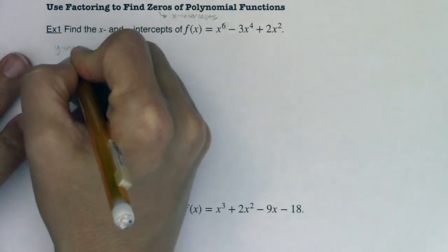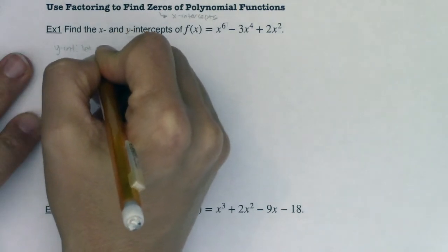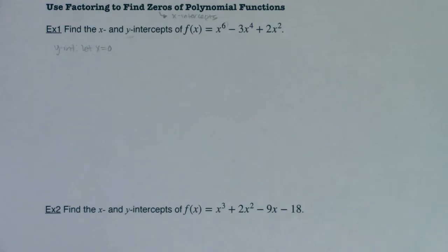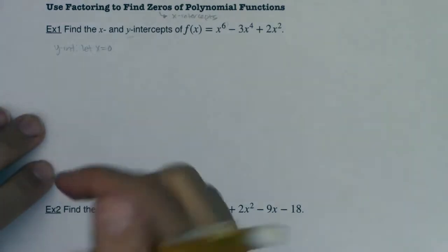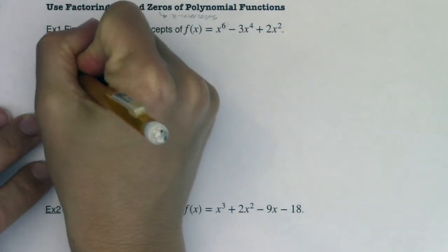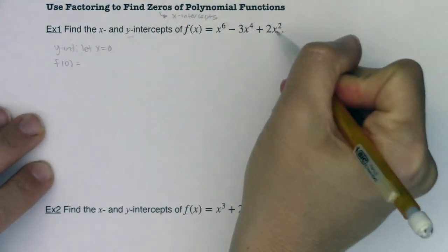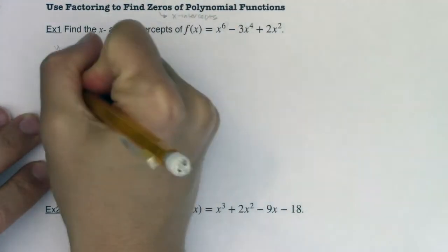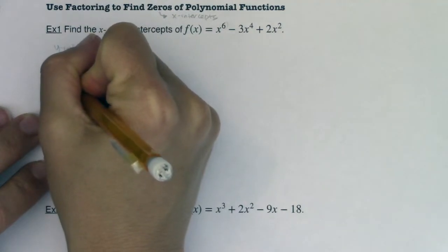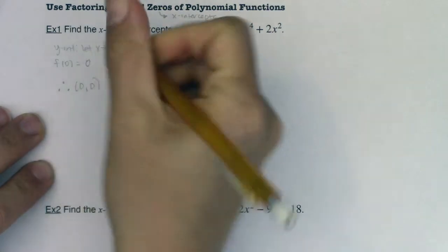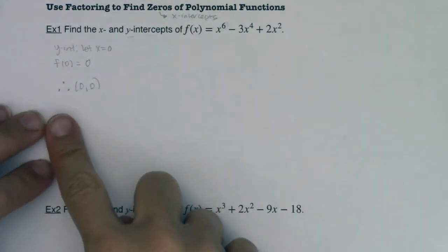So whenever you want to find the y-intercept, you're going to let x equal zero. So let's see what this will give us here. I'm basically asked to evaluate the function at zero. So f of zero would be, let's see, zero minus three times zero plus two times zero. So it is zero. So my y-intercept is the ordered pair zero comma zero. So this function goes through the origin. Okay, great.